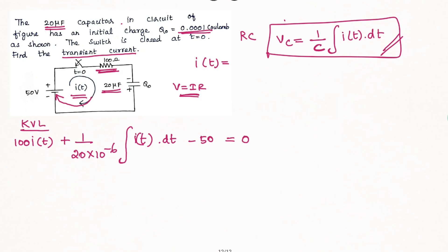An important thing to note is that this capacitor has an initial charge. We will consider the initial voltage V0 across the capacitor. The polarity of V0 is negative on one terminal and positive on the other. That gives us this equation.